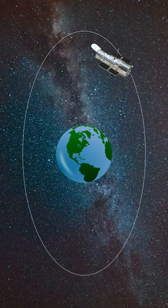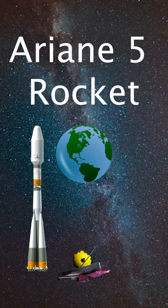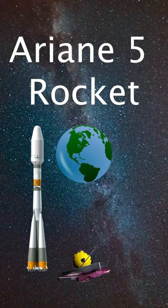Because Hubble is in Earth orbit, it was able to be launched into space by the Space Shuttle. Webb will be launched on an Ariane 5 rocket and because it won't be in Earth orbit, it is not designed to be serviced by the Space Shuttle.